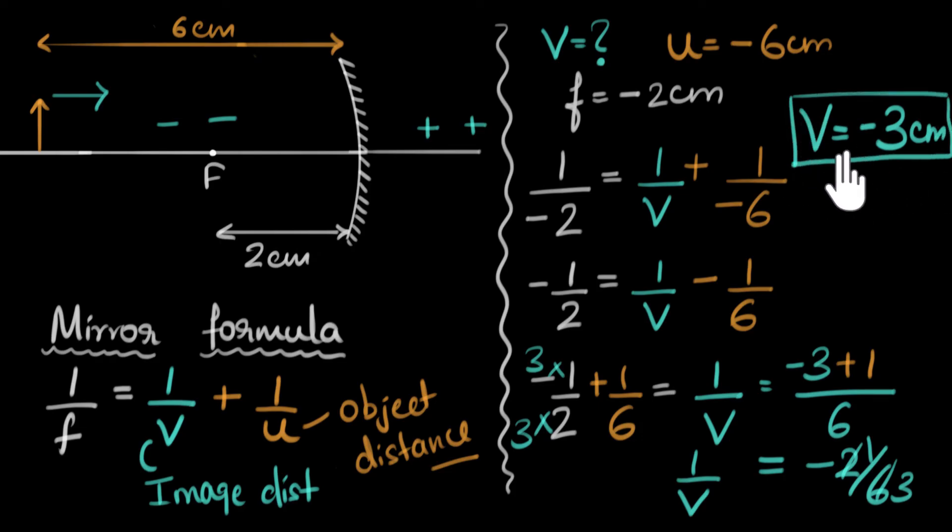And there we have it. We have found what V is. What this means is that the image is three centimeters away from the pole, from the center of this mirror. Remember, whenever we are using this formula, all the distances are from the pole. Three centimeters, but which side? The sign tells me it's on the negative side, and so I know it's in front of the mirror. So it would be somewhere over here, because this is two as a given, so this would be somewhere over here, three centimeters. And there we have it. We have solved our problem.